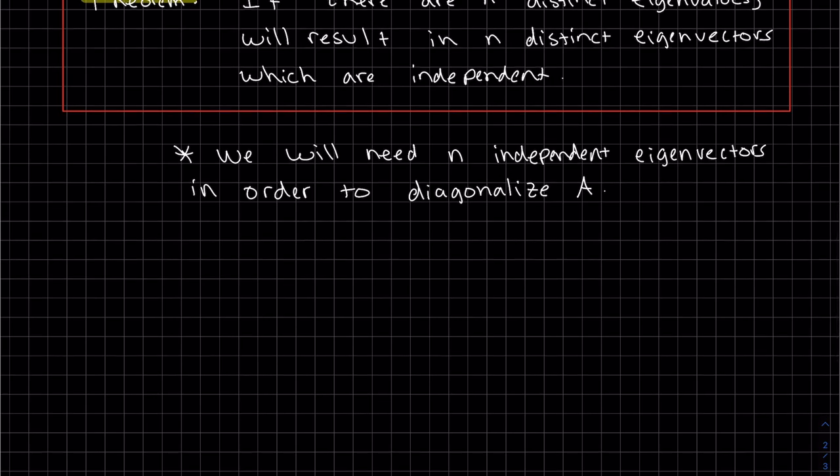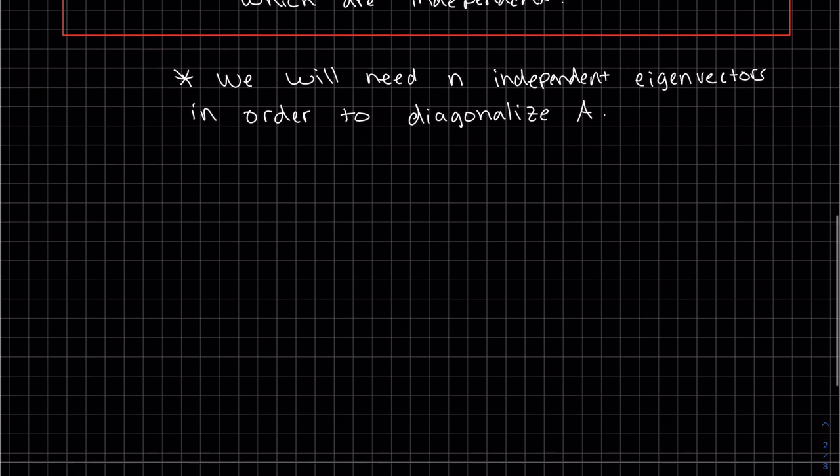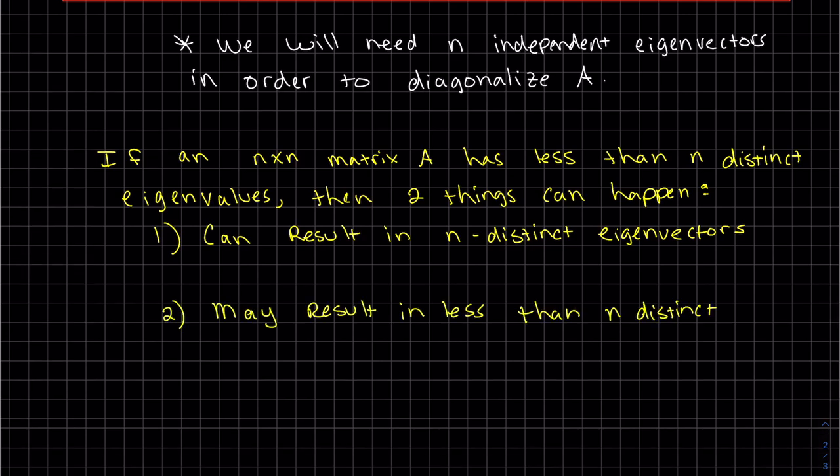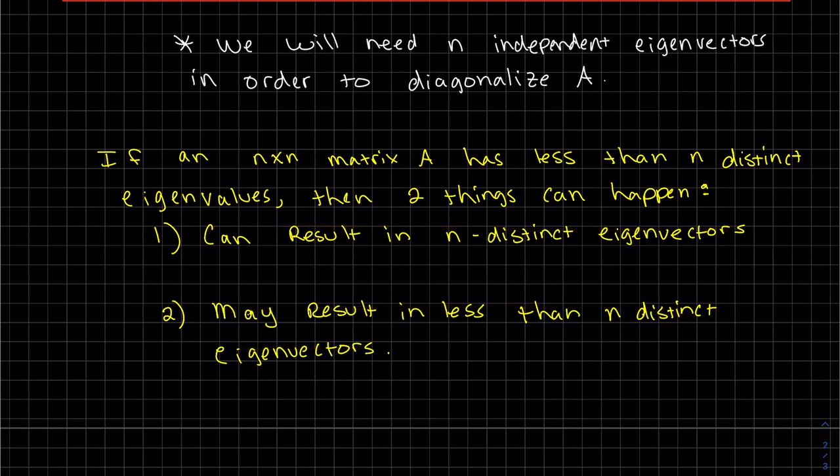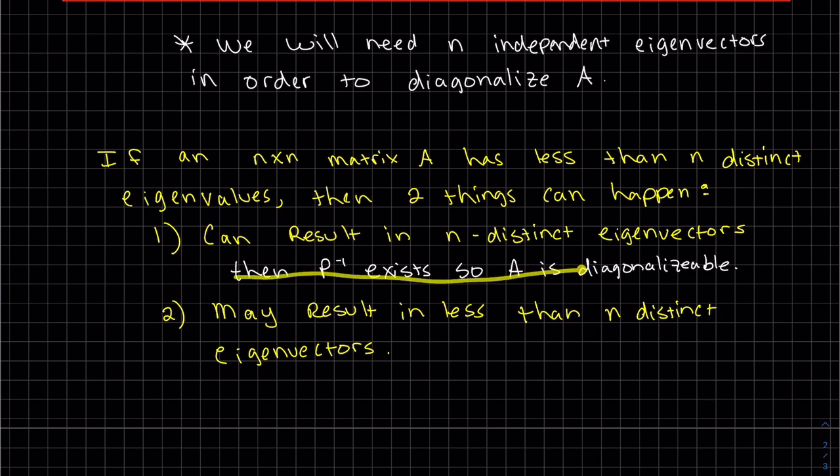So what happens in the case that there are less than N distinct eigenvalues? Well, two things can happen. So once again, if an N by N matrix has less than N distinct eigenvalues, then two things can happen. Either it results in N distinct eigenvectors or it results in less than. If it results in N distinct eigenvectors, then the inverse exists and A is diagonalizable. But if it results in less than N distinct eigenvectors, it's not diagonalizable.